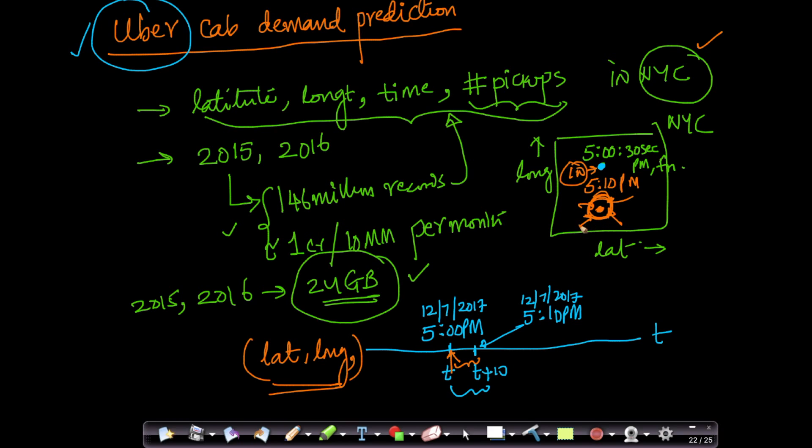So this is a very interesting problem that any cab company - be it Uber, Ola, you name it - all of them try to solve. And given this massive amount of 146 million records in one year and about 24 gigs of data between 2015 and 2016, this is a super beautiful dataset to play with.